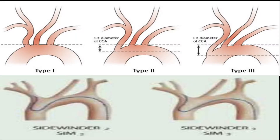There are three types of aortic arch, divided according to the ratio between the diameter of the common carotid artery to the distance between the horizontal line through the top of the arch and the horizontal line through the orifice of the innominate artery. In type A it is less than one, in type B it is between one to two, and in type C it is more than two. In the lower pictures we can see how easily we can catheterize vessels with Sim 2 and Sim 3 in type B and type C aortic arch.